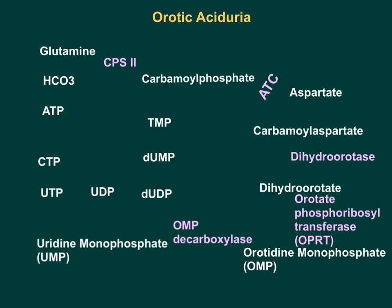Glutamine is going to combine with bicarbonate and ATP to make carbamyl phosphate. This job is done by a regulated enzyme of pyrimidine biosynthesis — carbamyl phosphate synthetase 2 (CPS2). Once you get carbamyl phosphate in the cytoplasm, it is going to combine with aspartate to make carbamyl aspartate.